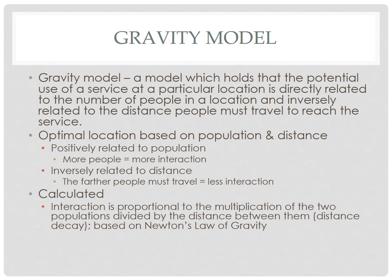The last thing we need to address before Central Place Theory is the gravity model. We've already discussed the gravity model once this year in our migration unit, where we used it to predict migration patterns — larger places would likely have more migrants leaving or coming. That fits with Ravenstein's laws of migration. In this unit, we're going to use the gravity model because it's really useful in explaining how different cities interact with one another.